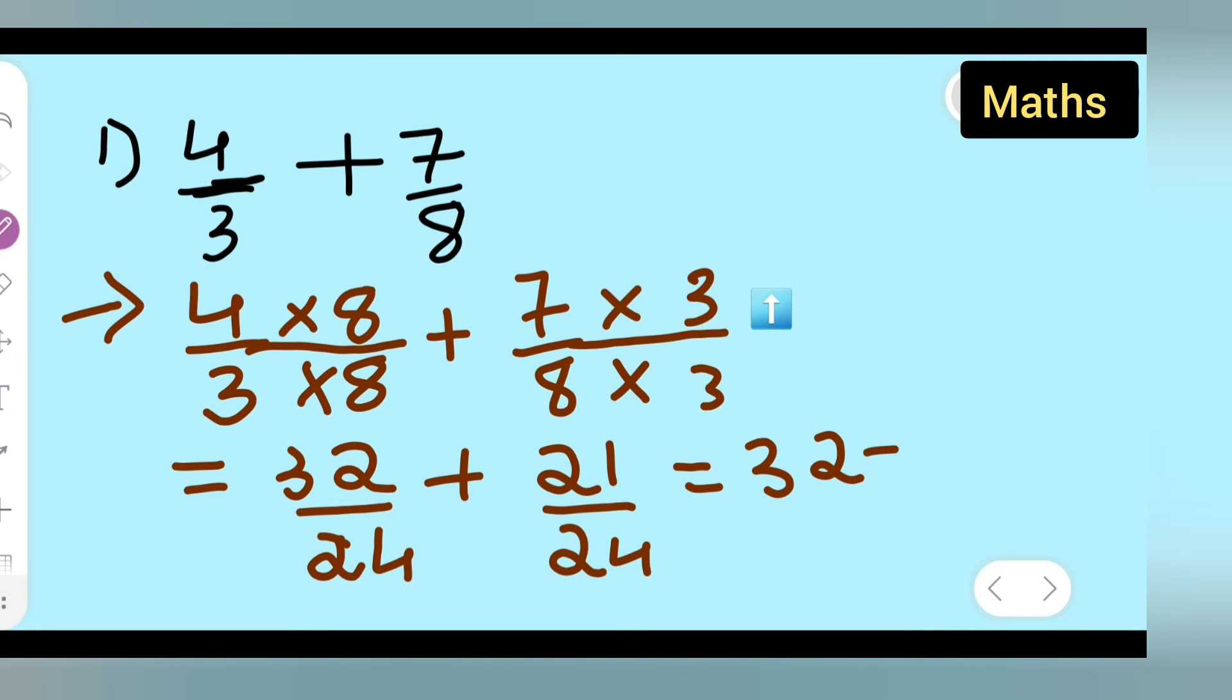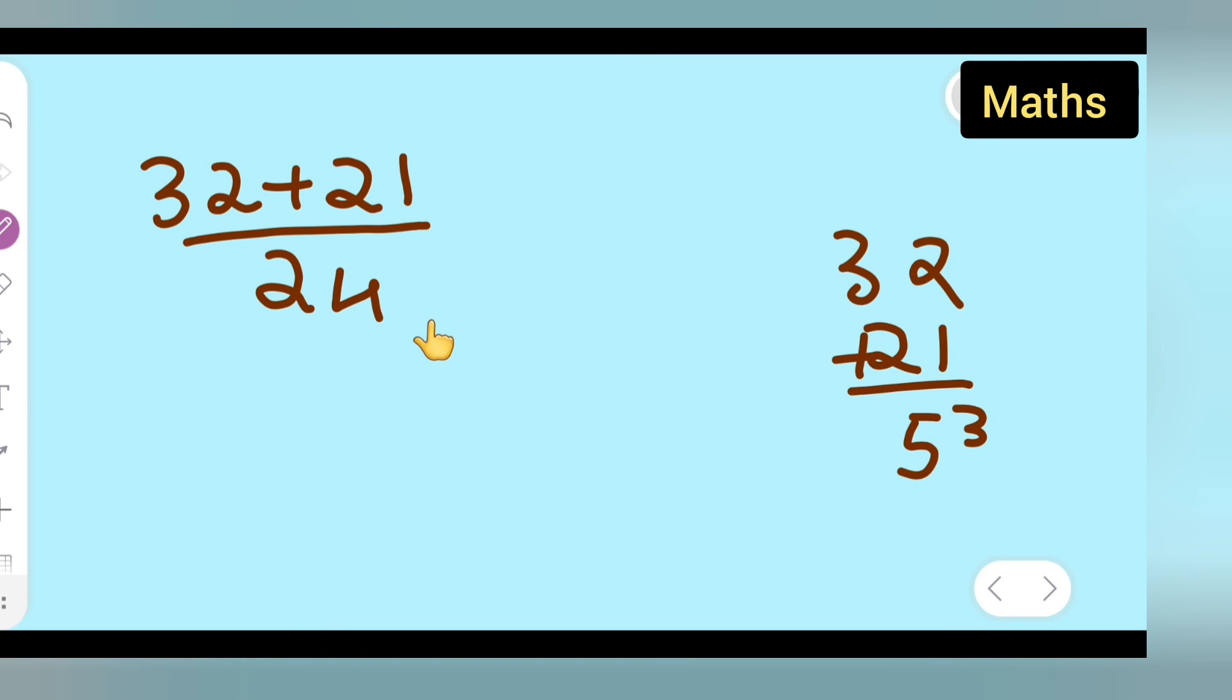Now you need to add these numbers, 32 plus 21 upon 24. This is 2 plus 1 is 3, then 3 plus 4 is 5, so 53. Your answer is 53 upon 24.